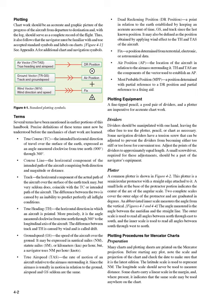Ground speed may be expressed in nautical miles (nm), statute miles (sm), or kilometers (km) per hour, but a navigator uses nm per hour — knots. True airspeed (TAS): the rate of motion of an aircraft relative to the air mass surrounding it. Since the air mass is usually in motion in relation to the ground, airspeed and GS seldom are the same.